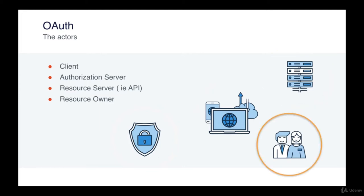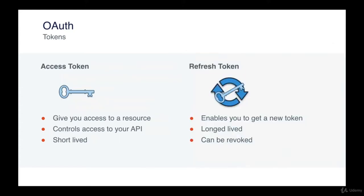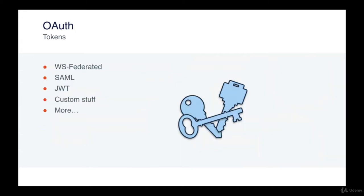OAuth uses a set of permissions called scopes. The scopes are usually displayed in the consent UI when you're trying to access a resource. There's no real standard on how the scope should be defined, apart from the fact that they should be separated by a space. The authorization server will give you a token that will have a set or subset of the permissions you have access to. Your access tokens are fairly short-lived — typically a few minutes up to a day — but you'll have a refresh token available also. With that refresh token, you can get a new access token to continue accessing a resource. The refresh token could be revoked at any time by the server. Tokens can take different forms — WS-Federation, SAML, or JWT — but we will focus more on JWT in the next lesson.